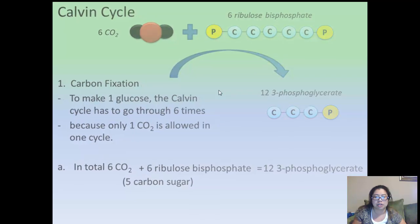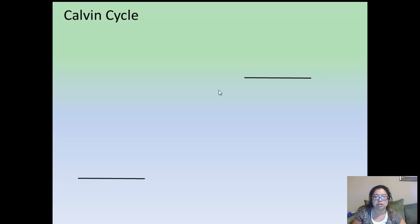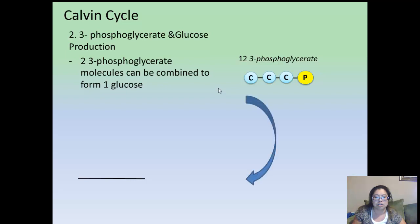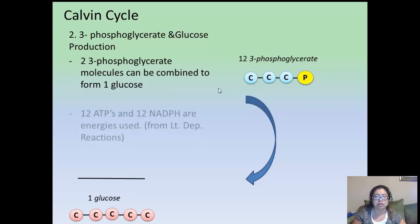The second step in the Calvin Cycle is called the 3-phosphoglycerate and glucose production. Two of the phosphoglycerate molecules combine to form one molecule of glucose. They take two from the twelve 3-phosphoglycerates and eventually form one molecule of glucose. In order to do that, they need energy: twelve ATPs and twelve NADPHs, all from the light-dependent reactions.